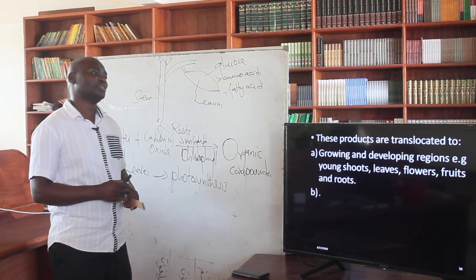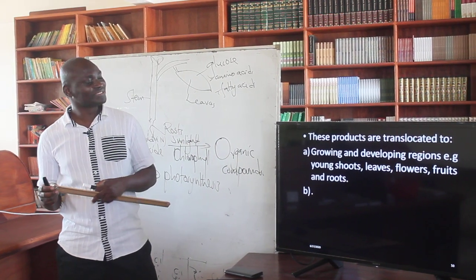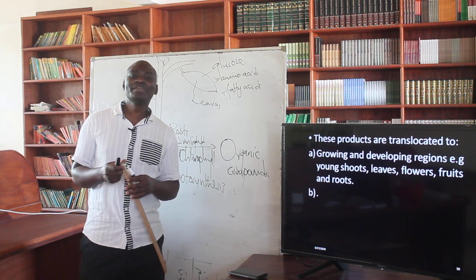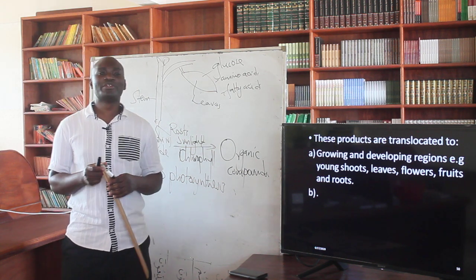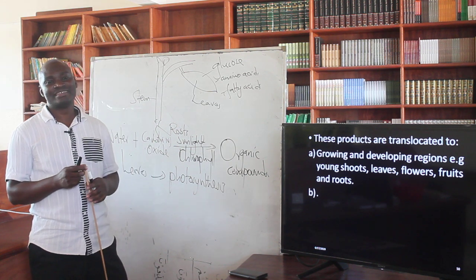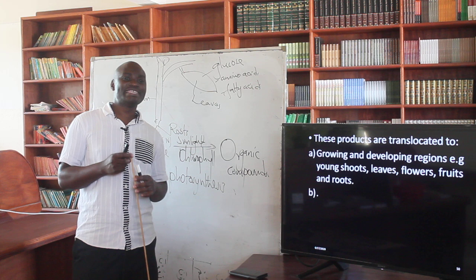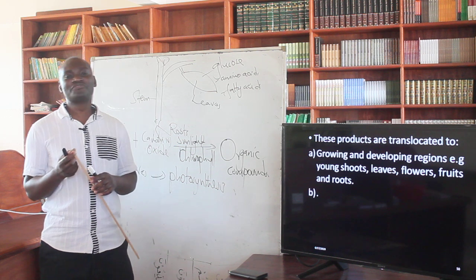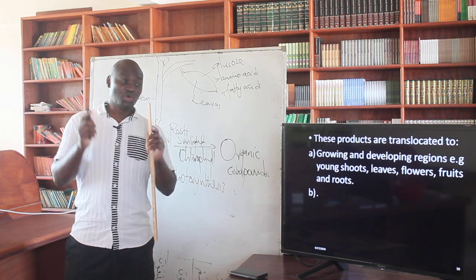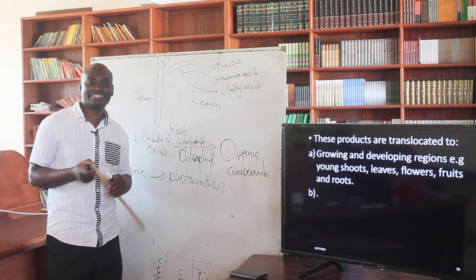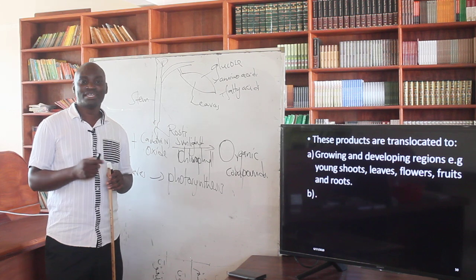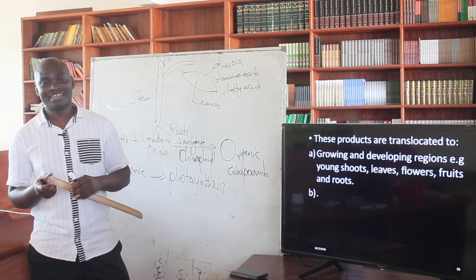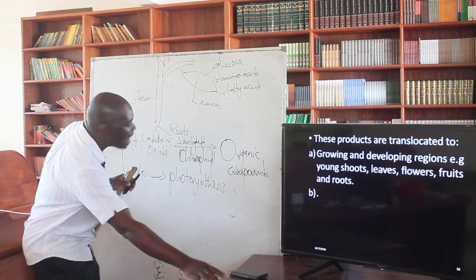These products are taken to the growing and developing regions of the plant. Examples of those regions include young shoots, leaves, flowers, fruits, and roots — all areas within the plant that undergo development. For development to occur, nutrients are required, and that is why these products are transported to those sites.